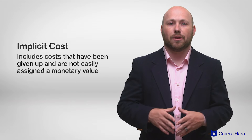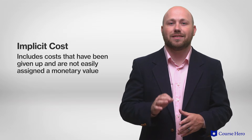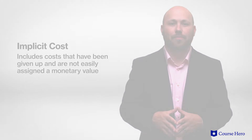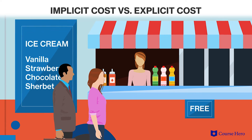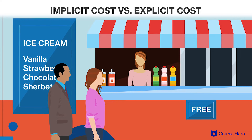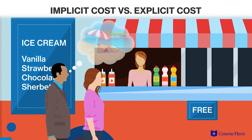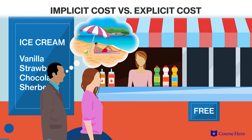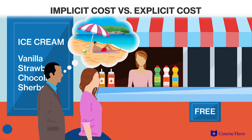Implicit costs, however, include costs that have been given up and are not easily assigned a monetary value. If you wait in line to get a free ice cream, you may have zero explicit costs, but your time in that line could have been spent doing something else. That time you spent in line is an implicit cost.